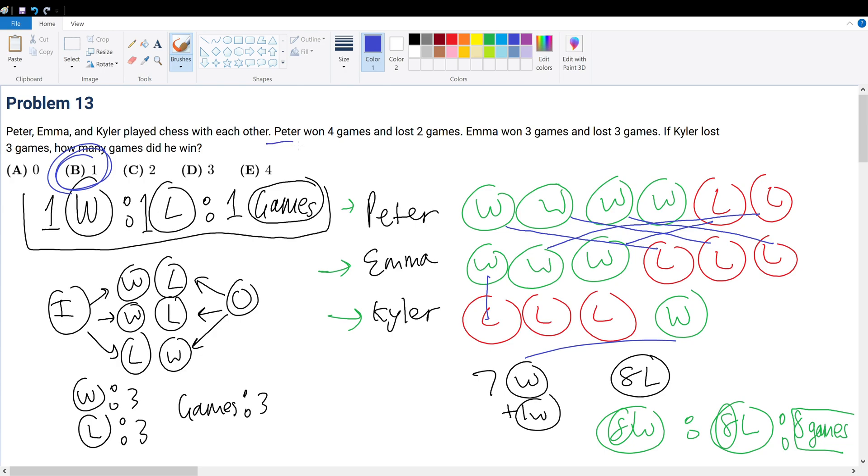Because, remember, Peter and Emma only have this number of total possibilities. So we cannot subtract out more possibilities than we already have. So we cannot add more wins and losses to their already given total. So that means we can only have 1 game that Kyler won.